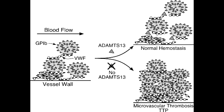Thrombotic thrombocytopenic purpura, or TTP, is when you have a deficiency of ADAMTS-13, which is the von Willebrand factor metalloprotease. When you have a deficiency of this, it leads to a decrease in degradation of the von Willebrand factor multimers.